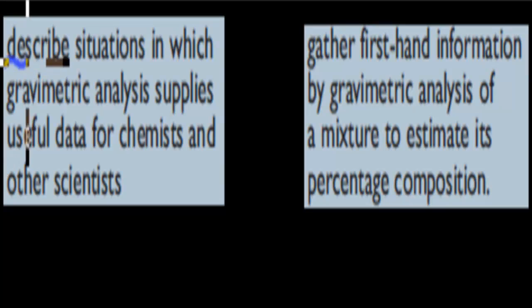It says, describe situations in which gravimetric analysis supplies useful data for chemists and other scientists. And the other one is an experiment you've done, just to go through gravimetric analysis again, and to estimate the percentage composition of different substances.